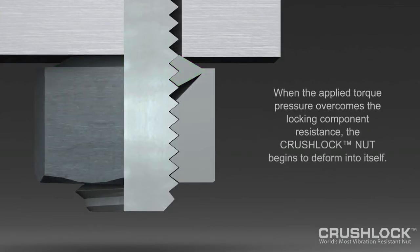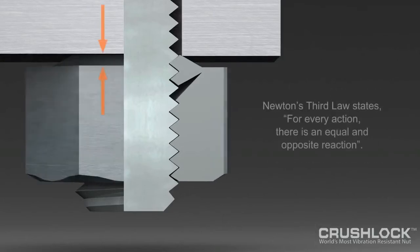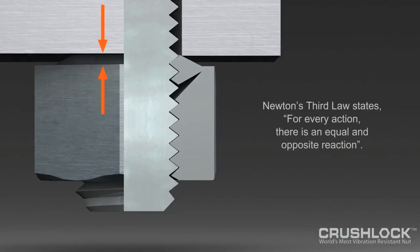The strength of the Crushlock Permanent Nut is unsurpassed. Depending on the nut size and material, Crushlock Permanent Nut has been tested to hold over 500% of the standard nut torque.